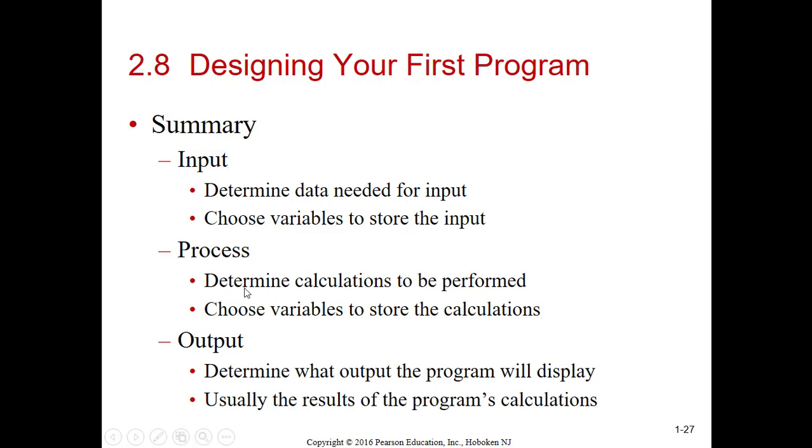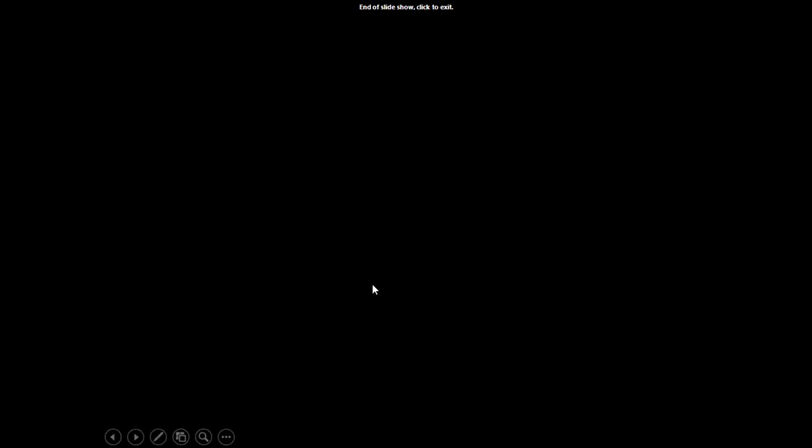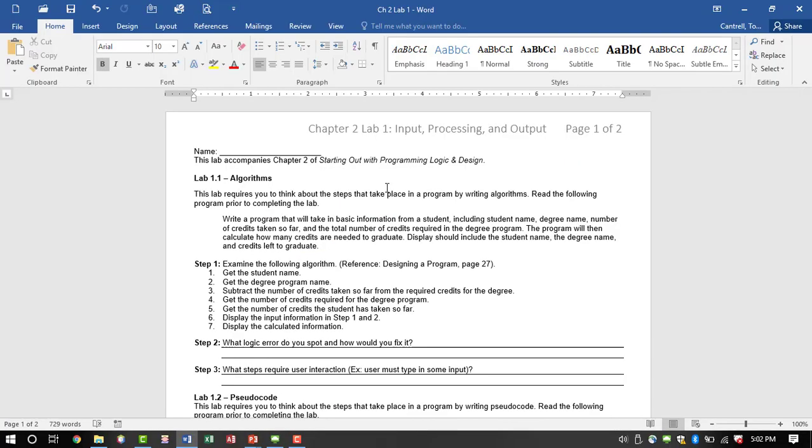The summary is, there's your input, processing, and output. Already talked about that. Complete the Chapter 2 lab sheet that's located in the Chapter 2 section in Blackboard. You go to Blackboard, Chapter 2, find the lab sheet and download it. Go open up the lab sheet and complete it.